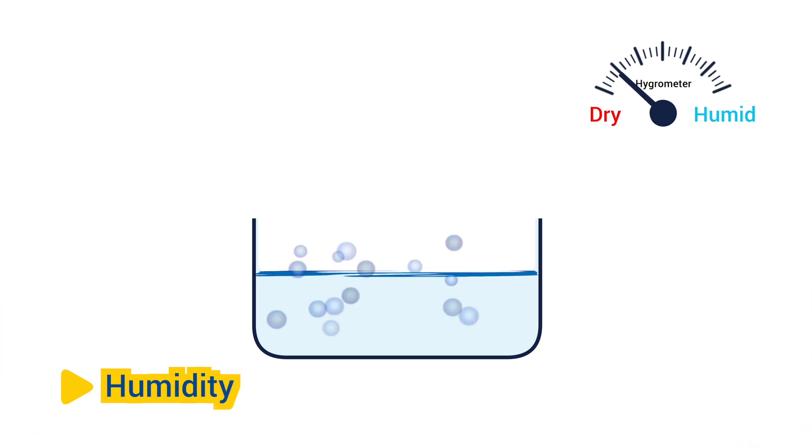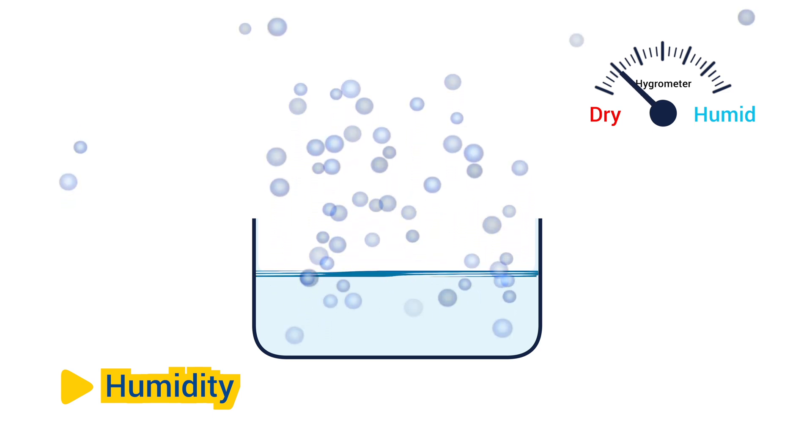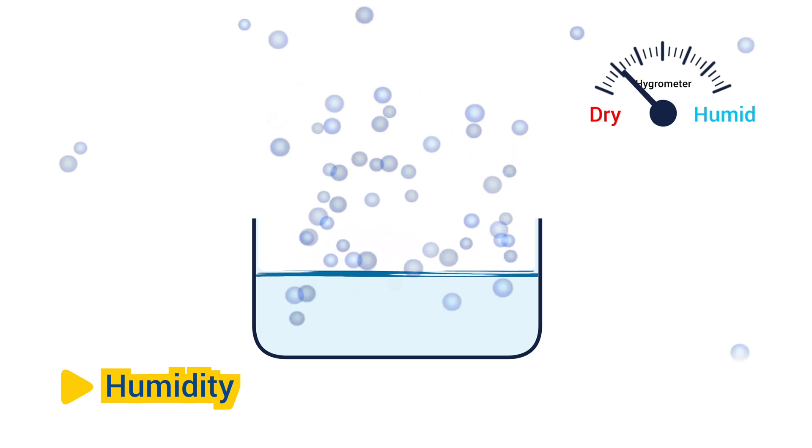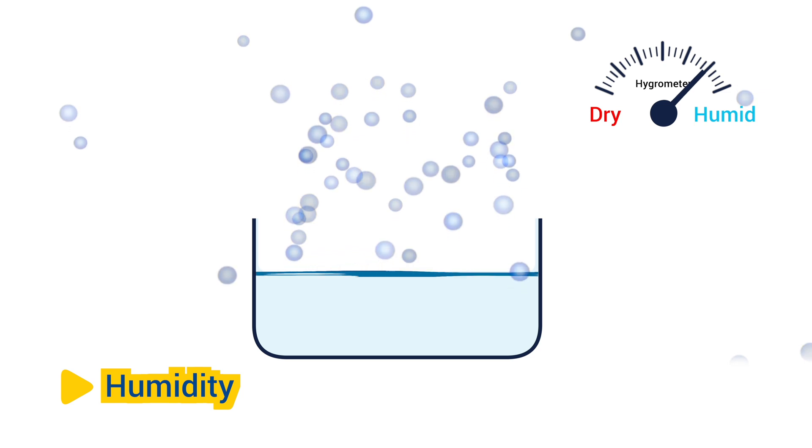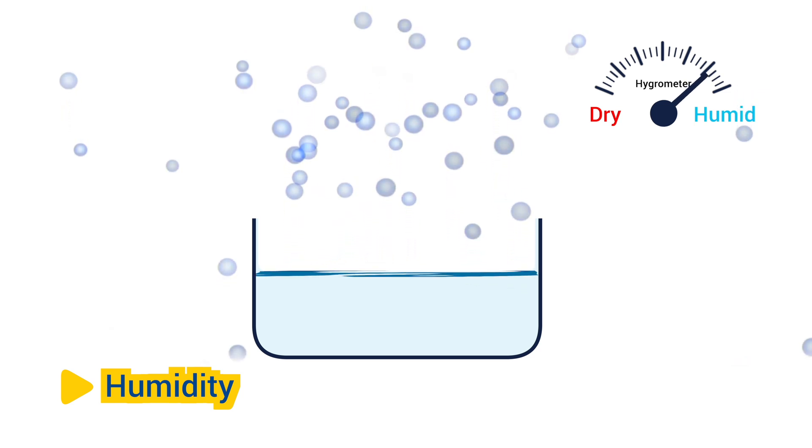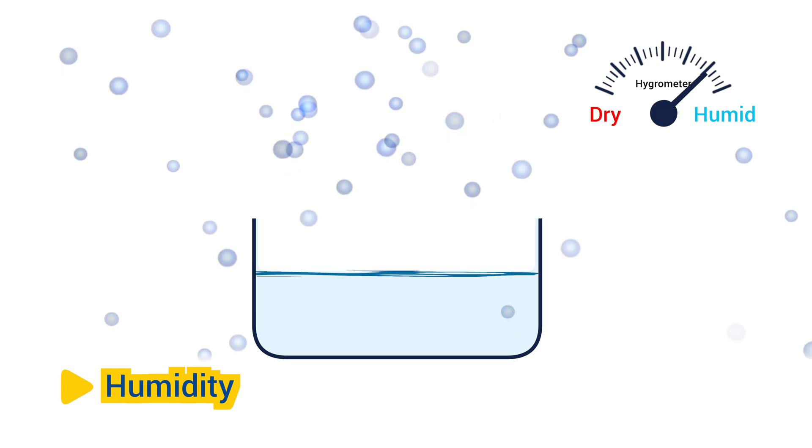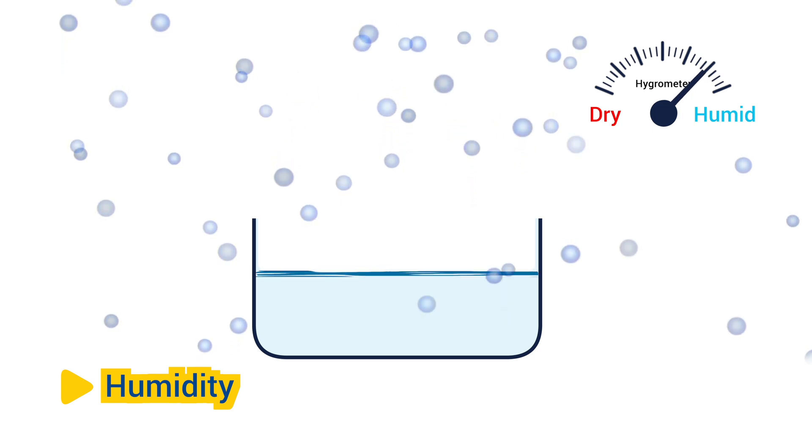Humidity. The rate of evaporation is affected by the humidity of the surrounding air. Dry air can absorb more water vapor, creating a larger concentration gradient that promotes faster evaporation. Conversely, high humidity slows down the evaporation process because the air already contains a significant amount of water vapor, reducing the concentration gradient.